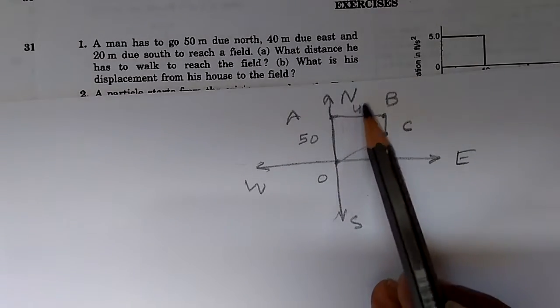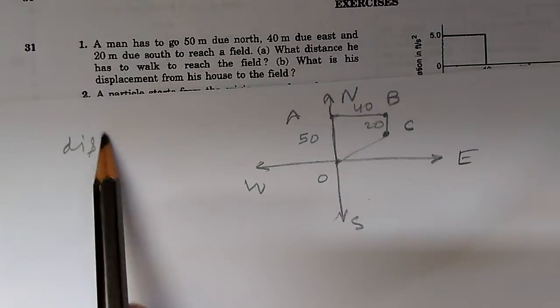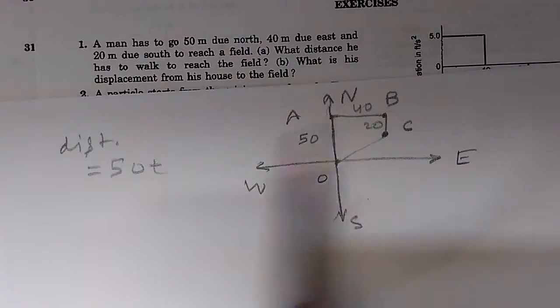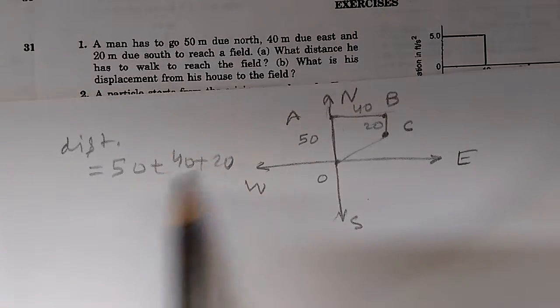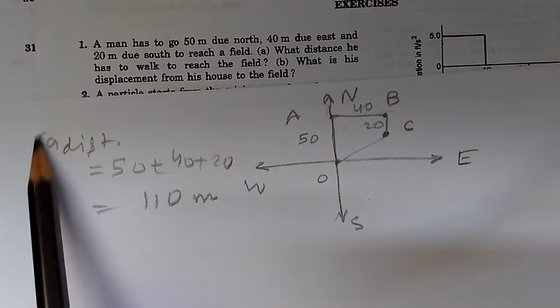So first of all, this is 40, and what is this total distance? The total distance he travels is equal to first he travels 50 meters, then he travels 40 meters, and then he travels another 20 meters. 50 plus 40 is 90, plus 20 is 110 meters. This is part A.